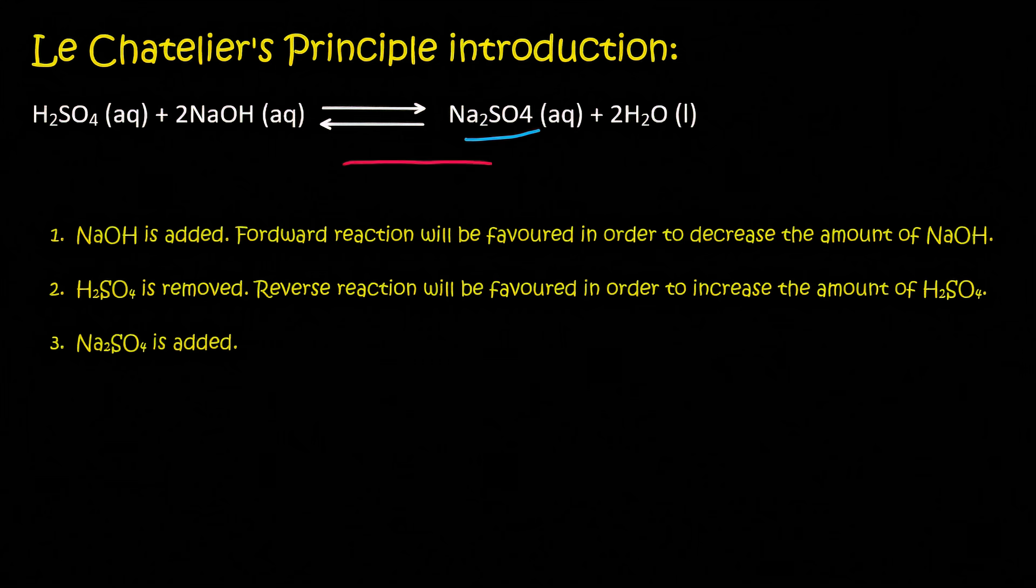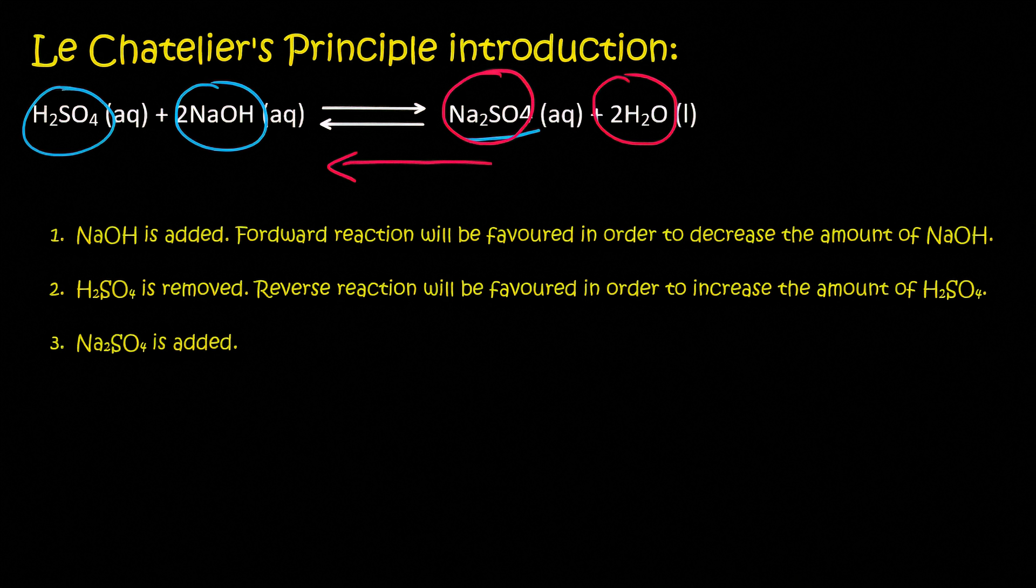And so the reverse reaction will be favored so that these two will become less and these two will become more. That is done so that the amount of Na2SO4 can decrease.